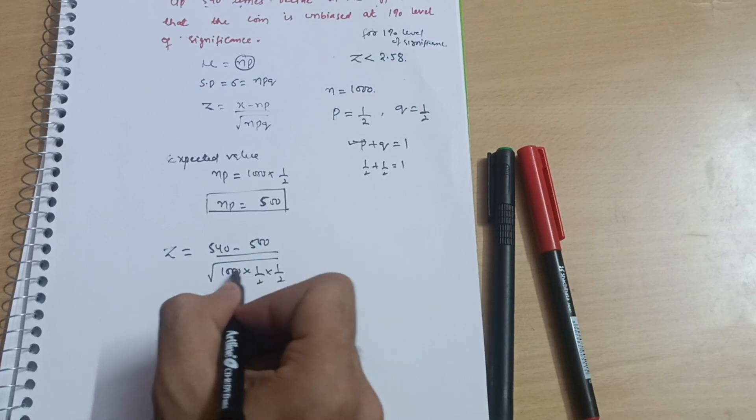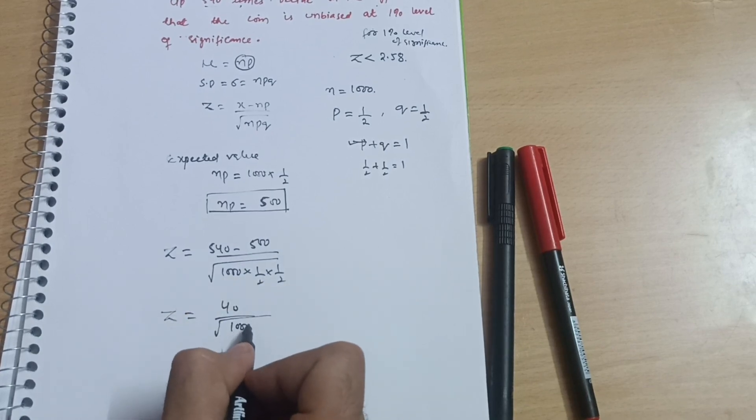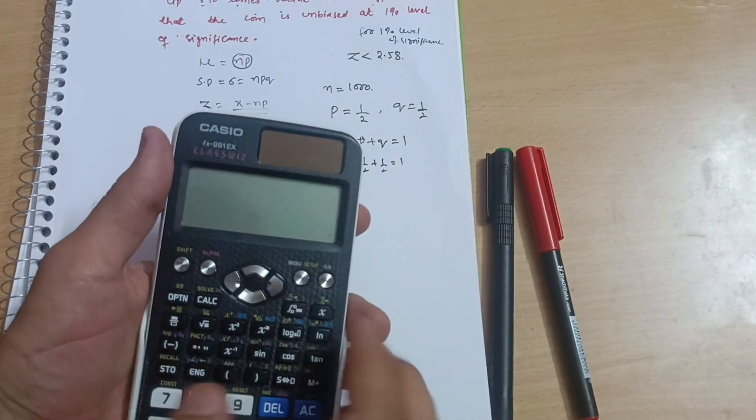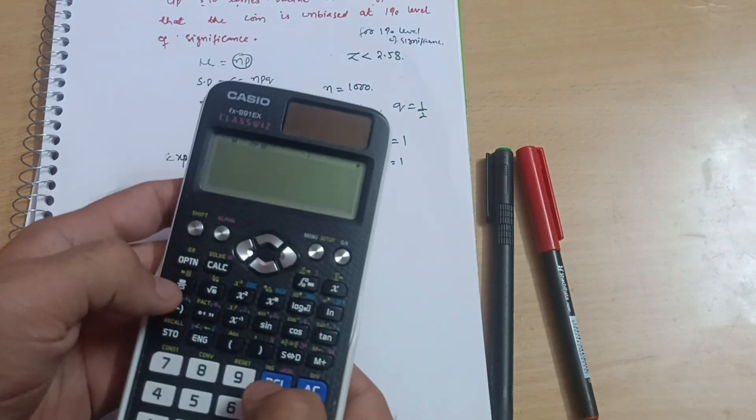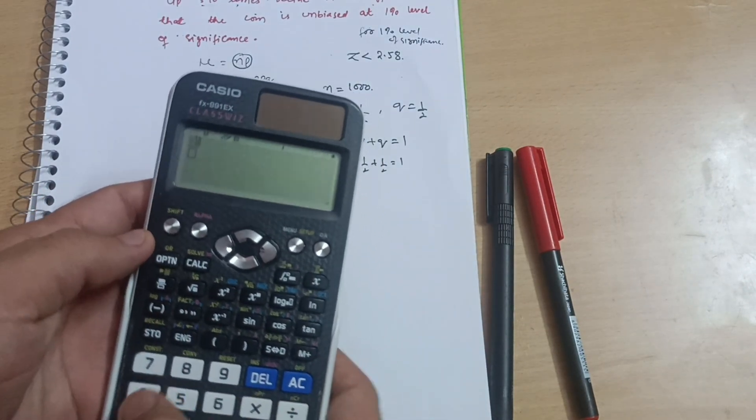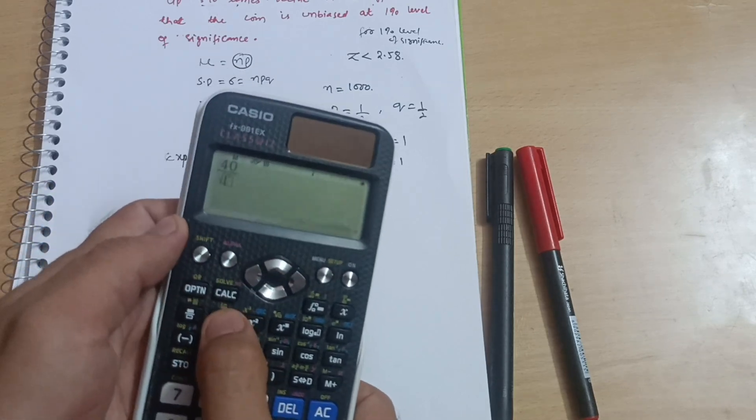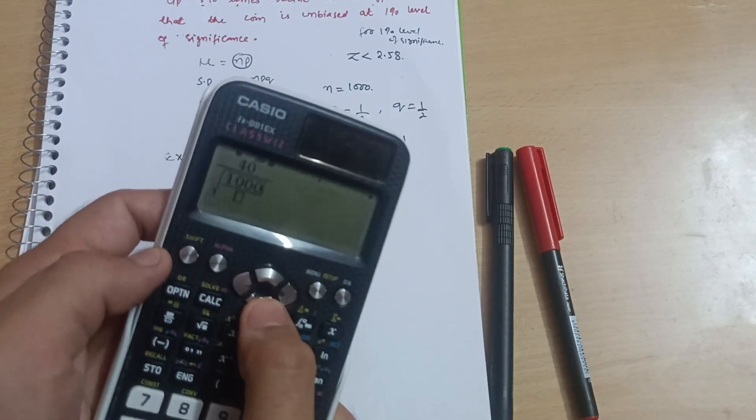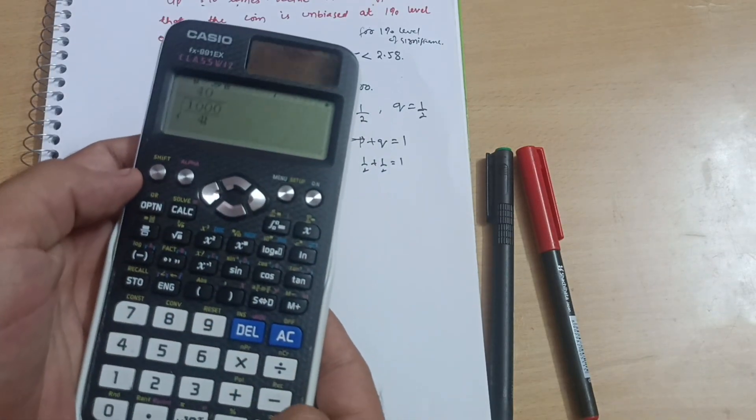You will get z equals 540 minus 500, which is 40, upon square root of 1000 upon 4. So 1000 upon 4, which equals 2.52. So you are getting z value of 2.52.